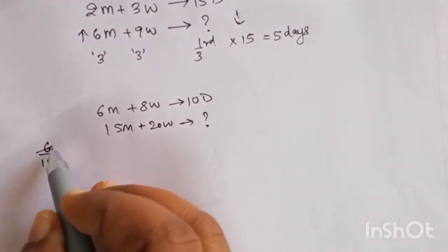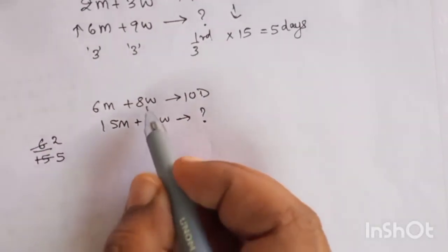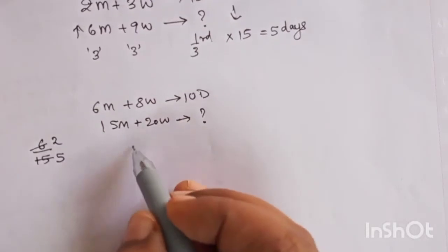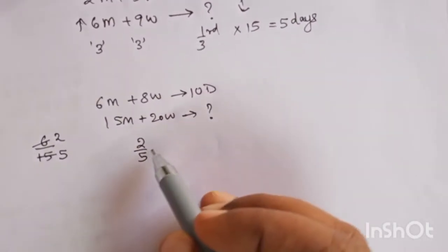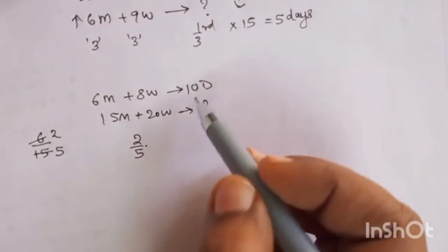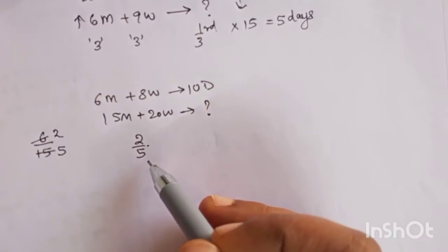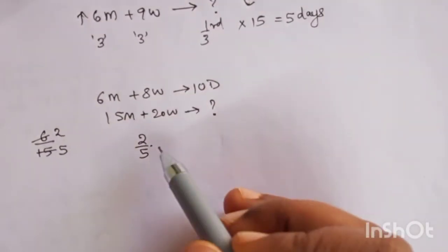So 6 by 15 is 2 by 5. Similarly, 8 by 20 is also 2 by 5. So the ratio is now 2 by 5. Now if you are getting confused whether you should take 2 by 5 into 10 or 5 by 2 into 10, here we did one third, so here it is 2 by 5.